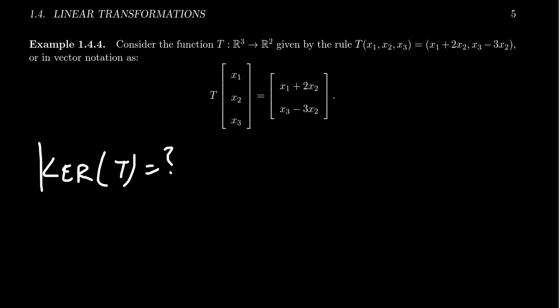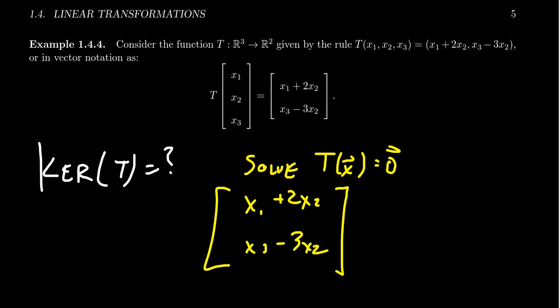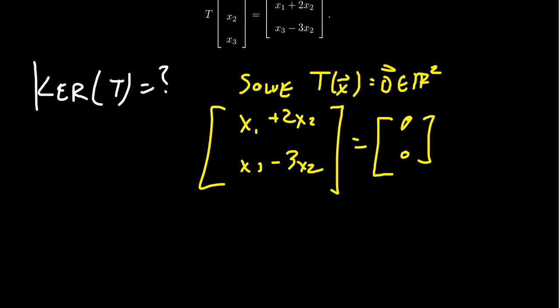If you're computing the kernel, remember what the definition of the kernel is all about. The kernel is trying to find out those vectors. You have to solve the equation T of x equals the zero vector. Let's unwrap that a little bit. T of x is given by this formula right here. You have x1 plus 2x2 and x3 minus 3x2. This is equal to the zero vector. This is the zero vector in R2, and as such, this is just a vector with two zero entries. So this is the equation, this is a vector equation that we're trying to deal with.